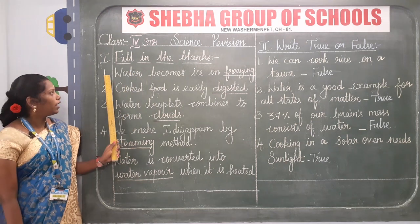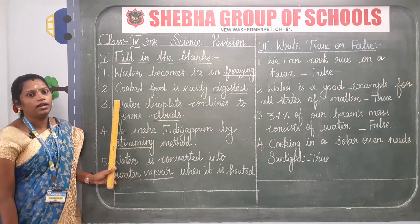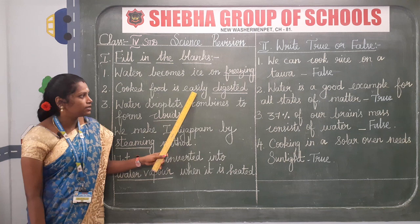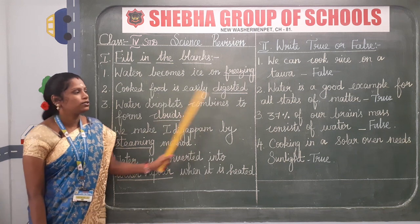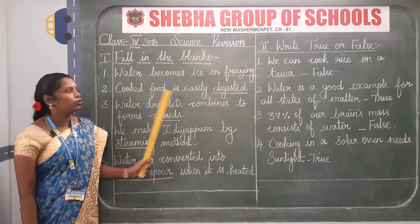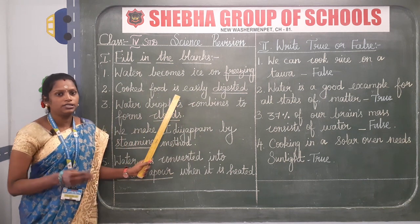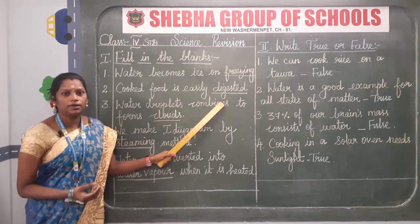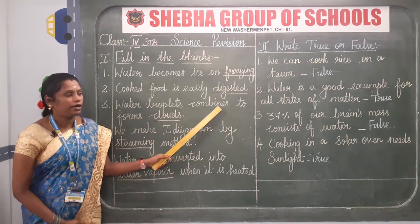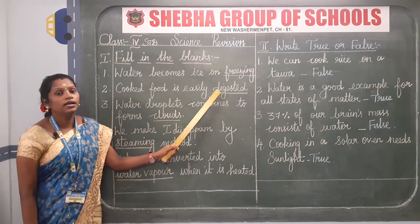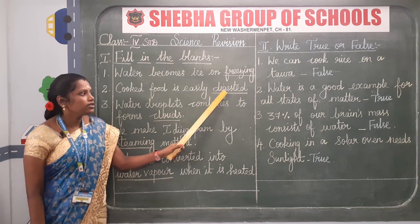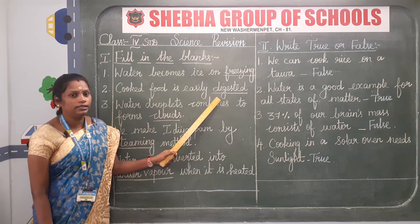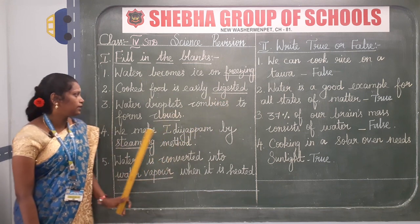After finishing number one, leave a line and write number two. Cooked food is easily blank — the answer is digest. Cooked food is easily digested. D-I-G-E-S-T-E-D. Underline the answer using scale and pencil.